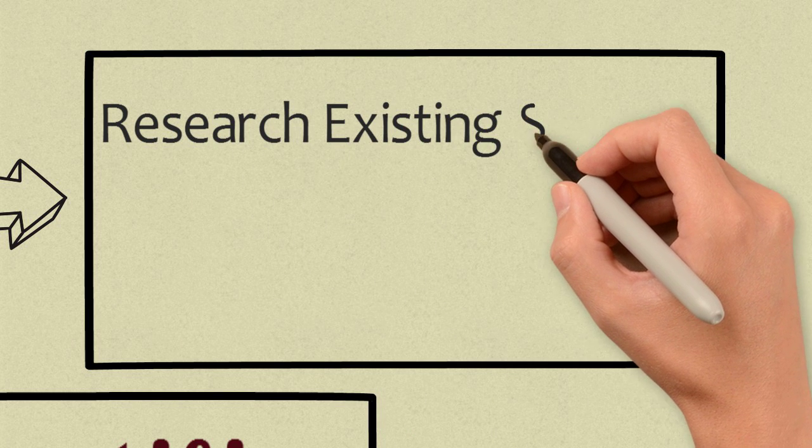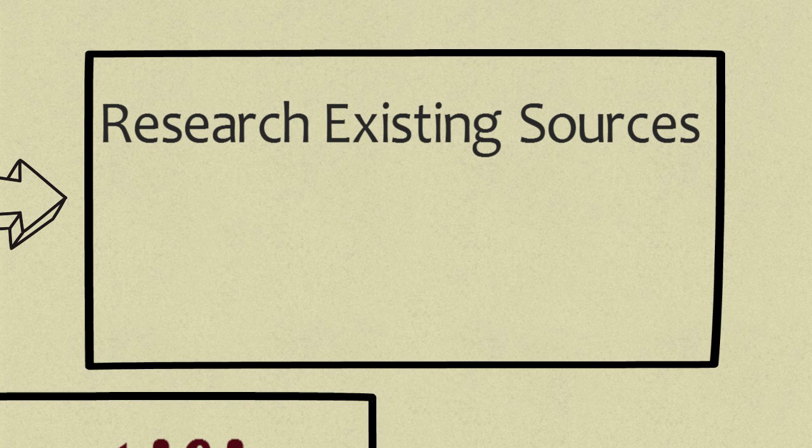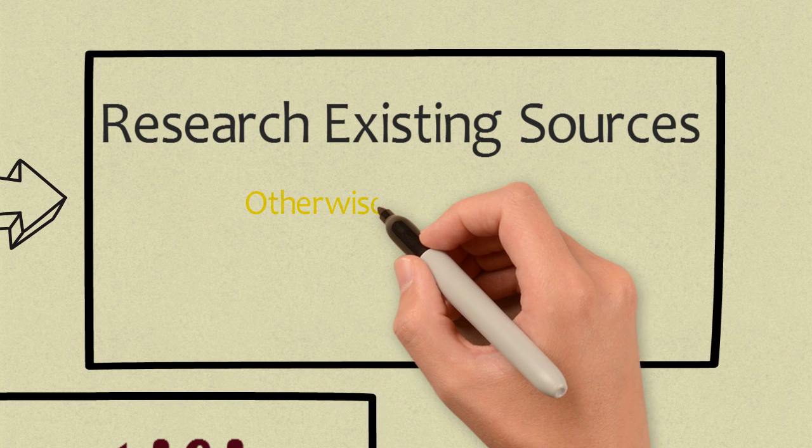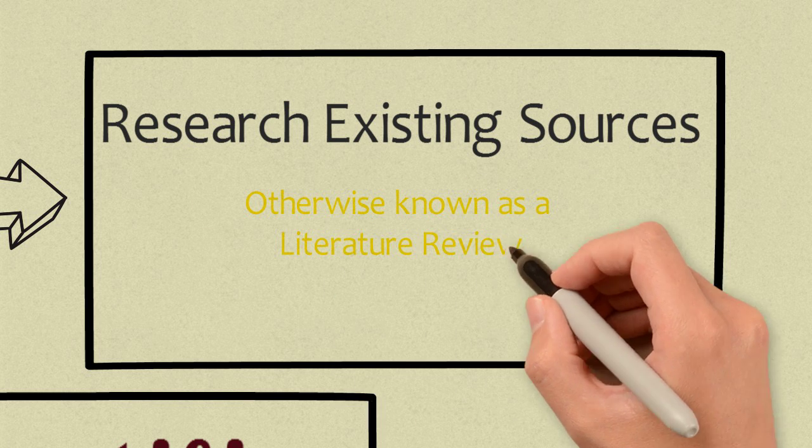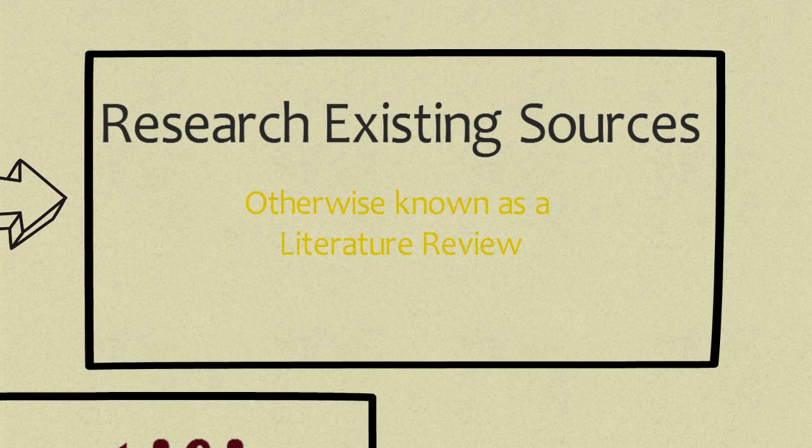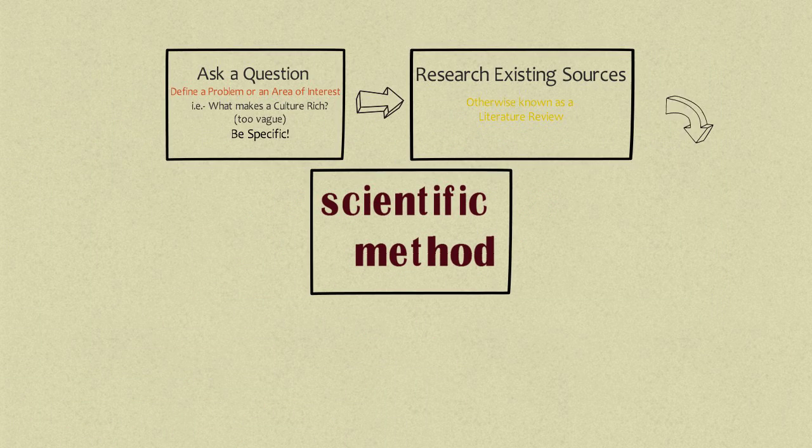Next, you need to research existing sources. This step is otherwise known as a literature review. Researching existing studies helps a researcher understand their own topic better and to build a study that would add to the research already conducted. One thing you want to make sure that you absolutely do not do is to create a study that has already been done or to plagiarize previous work.